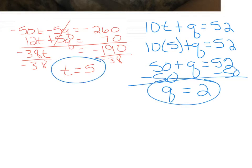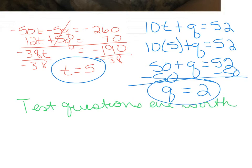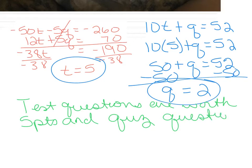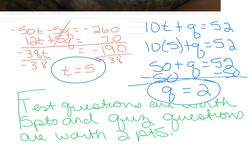Test questions are worth 5 points and quiz questions are worth 2 points. Of course, it's a word problem so you write your answer in a complete sentence: 'Test questions are worth five points and quiz questions are worth two points.' For my class, if you do not express your answer to a word problem in a complete sentence, you will not get full credit.